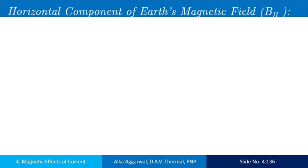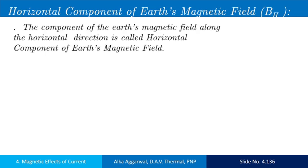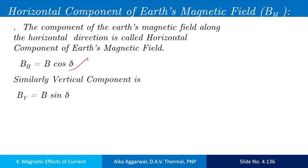The third magnetic element is the horizontal component of earth's magnetic field. The horizontal component is the component of the earth's magnetic field in the horizontal direction, given by BH equals B cos delta. Similarly, the vertical component BV equals B sin delta.